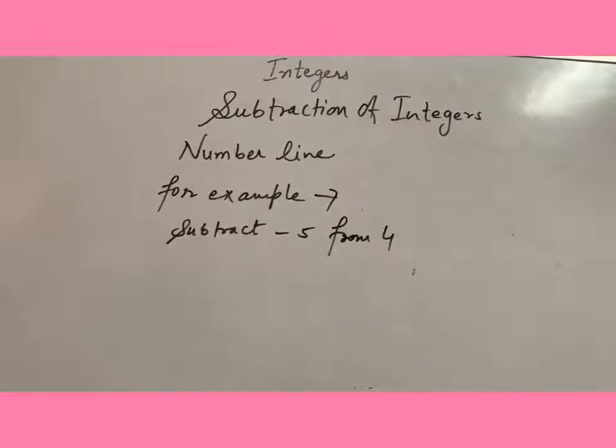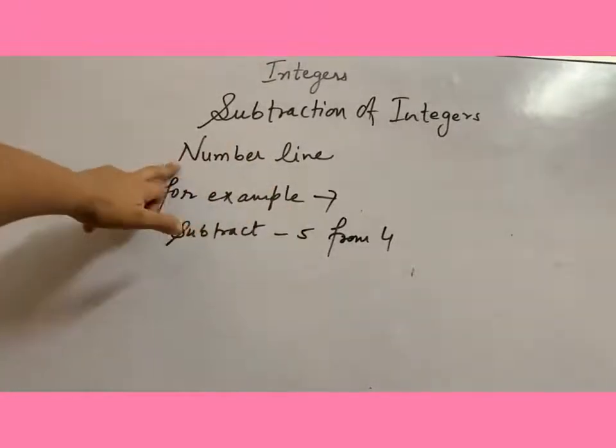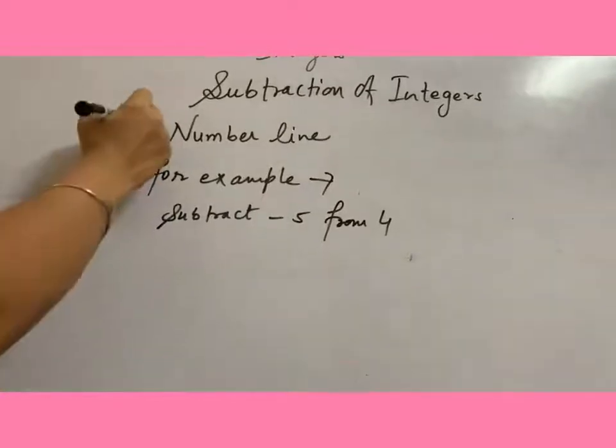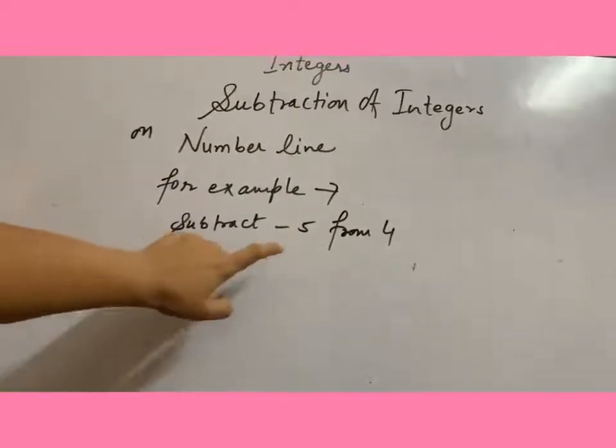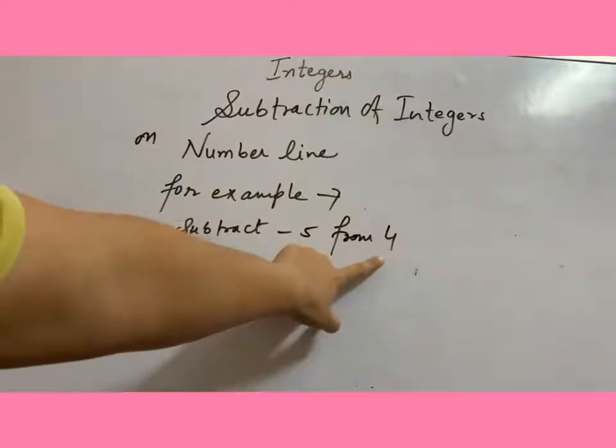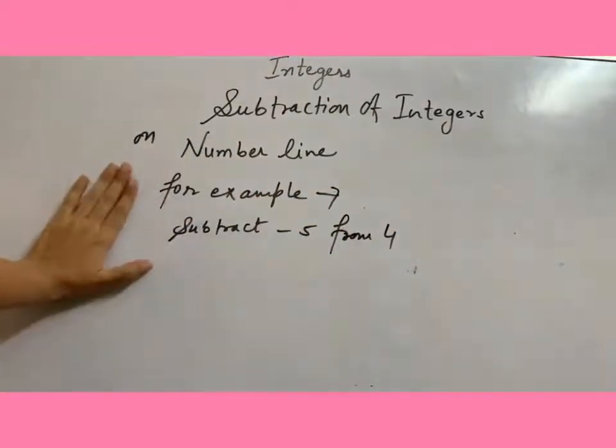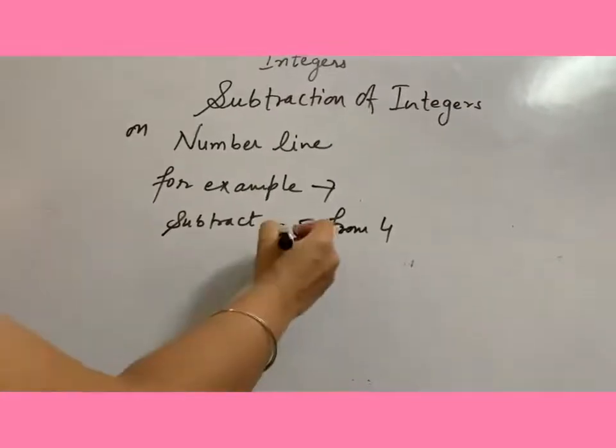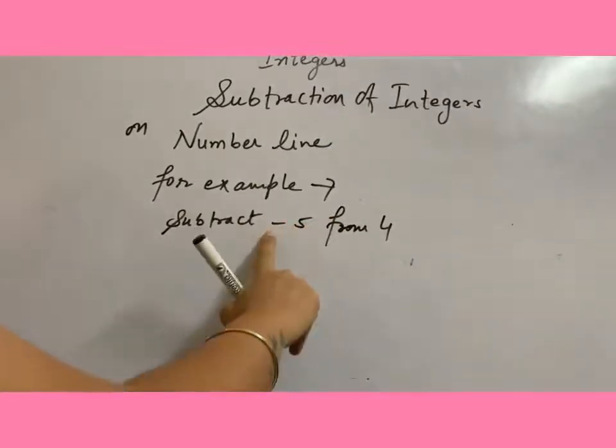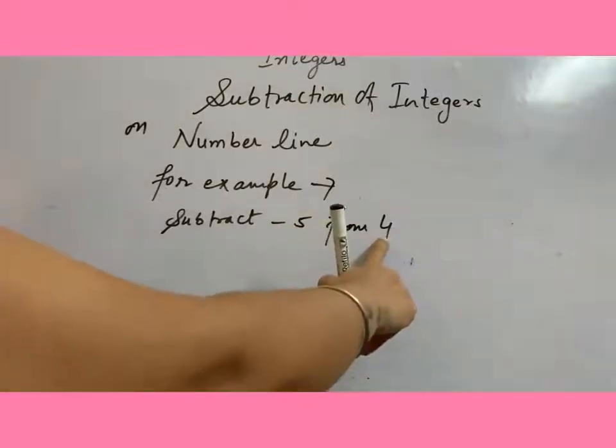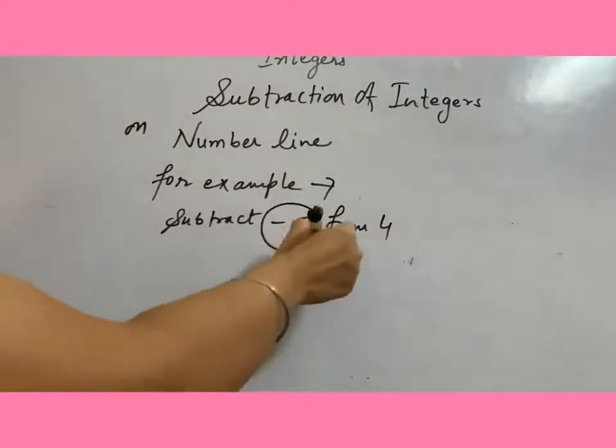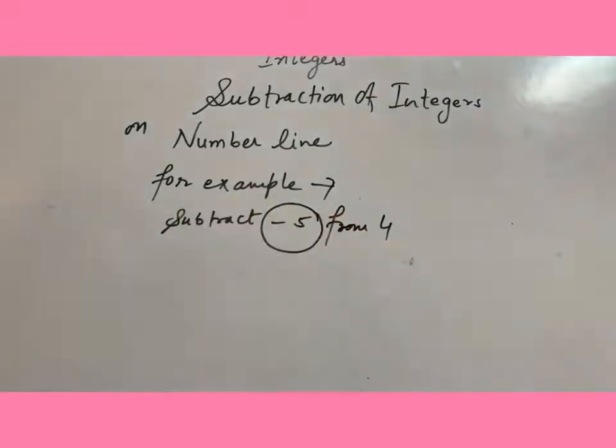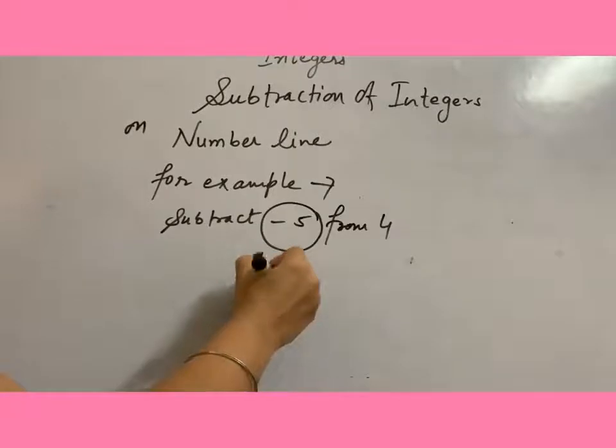Yes, dear students, our next topic is number line subtraction of integers on number line. For example, subtract minus 5 from 4. So from the previous video you have already learned if we are subtracting any integer from other integer, we have to change the symbol of the previous one which we are going to subtract.